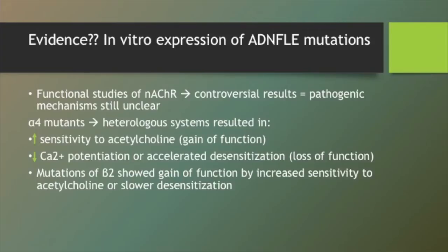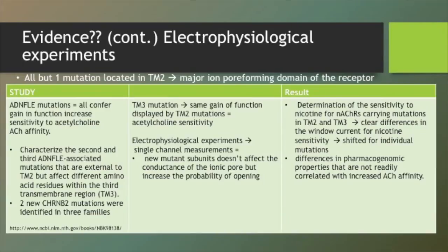Mutations of beta 2 showed a gain of function by increased sensitivity to acetylcholine or slower desensitization. An alpha 4 mutation also showed a gain of function by increased sensitivity to acetylcholine. Electrophysiological experiments show that even though each mutant exhibits specific properties, they all confer a gain of function with increased sensitivity to acetylcholine.